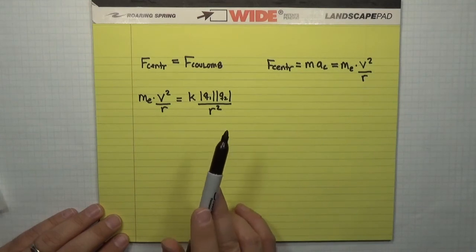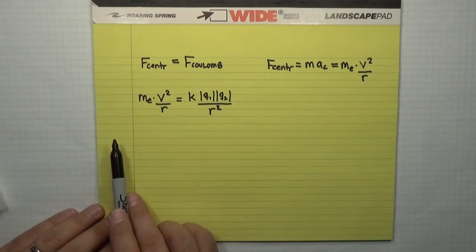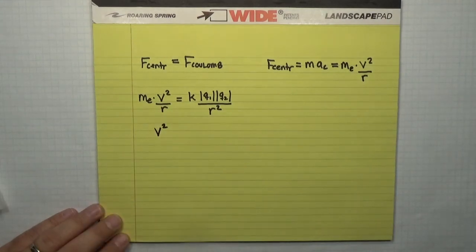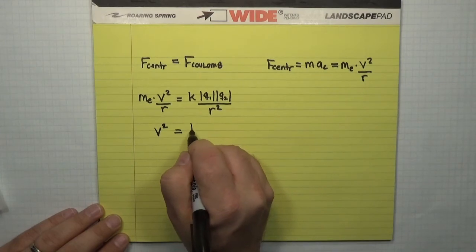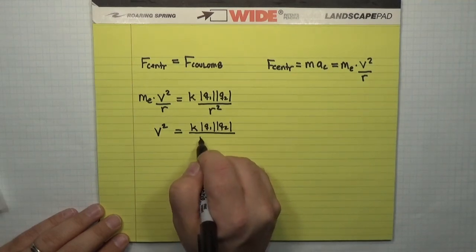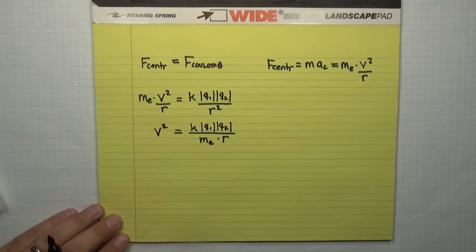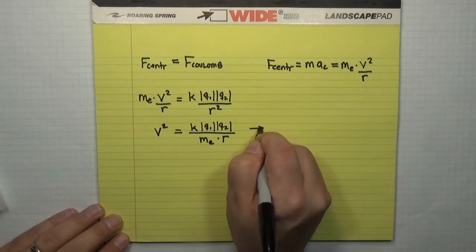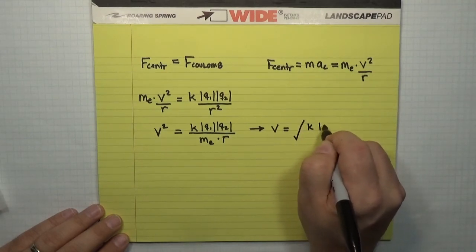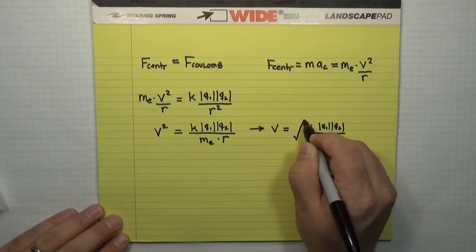What we're interested in is the speed — that's what the problem asks for. We solve for v: moving r to the right side cancels one power of r, and the mass of the electron goes to the denominator. After that algebra, we get v squared equals k times q1 times q2 divided by the mass of the electron times r. Taking the square root gives v equals the square root of k·q1·q2 divided by the mass of the electron times the radius of the orbit.